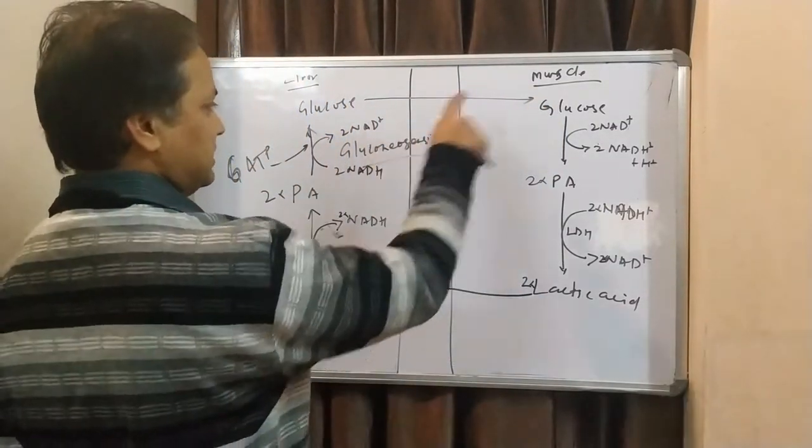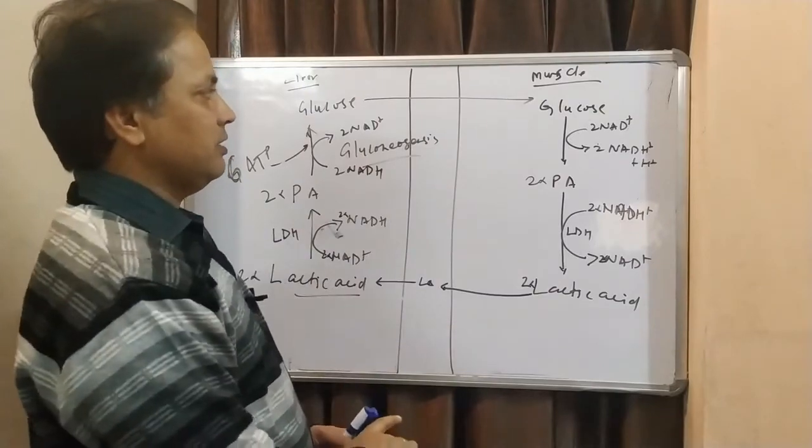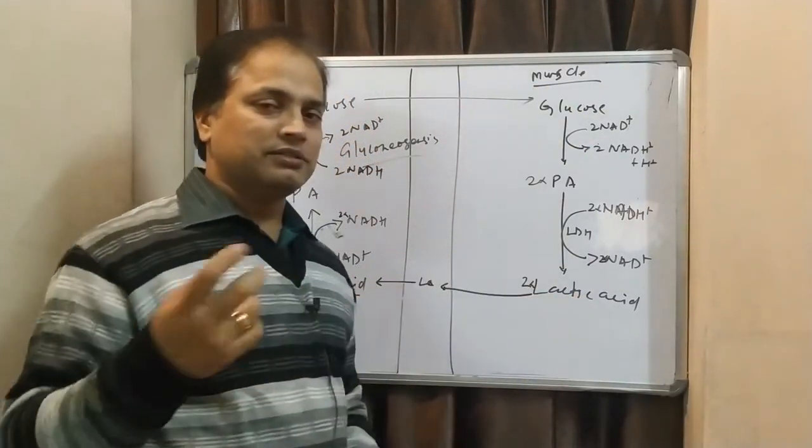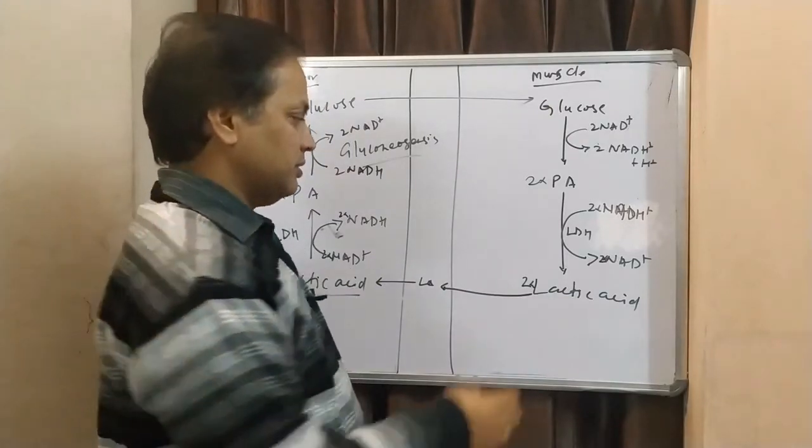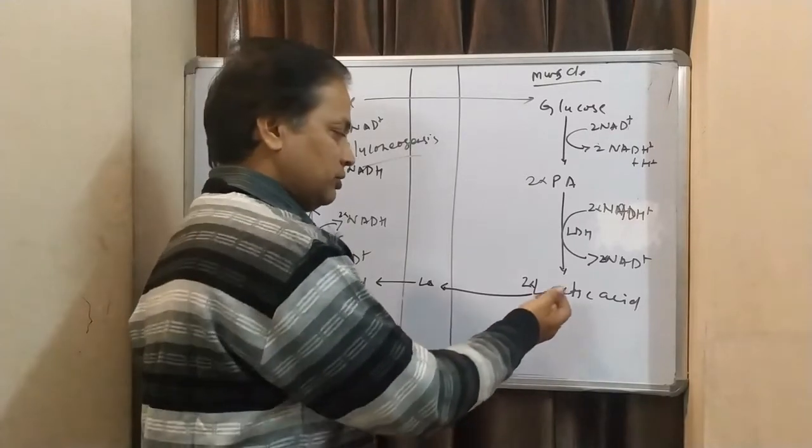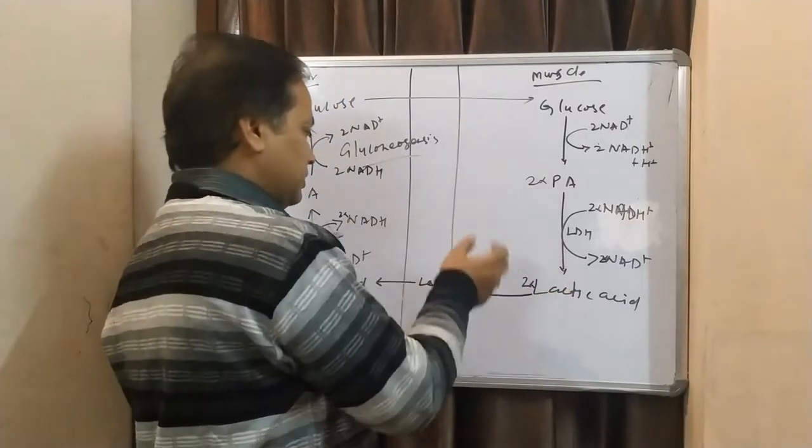So, this is a cyclic reaction where in muscles, glucose is converted to lactic acid during exertional exercise. Because lactic acid is a dead end, it cannot be utilized. So it has to be used by the body.